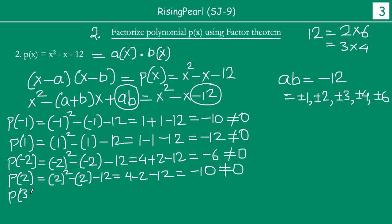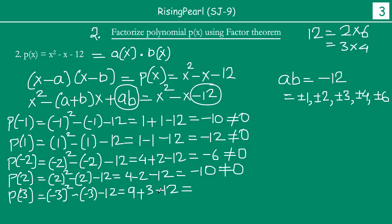We will now try p(−3). We have (−3)² minus (−3) minus 12. That is, minus 3 times minus 3 is 9, and minus times minus 3 is plus 3, then minus 12. So 9 plus 3 is 12, and 12 minus 12 is indeed equal to 0. So we found our first factor — minus 3 is one of the roots.